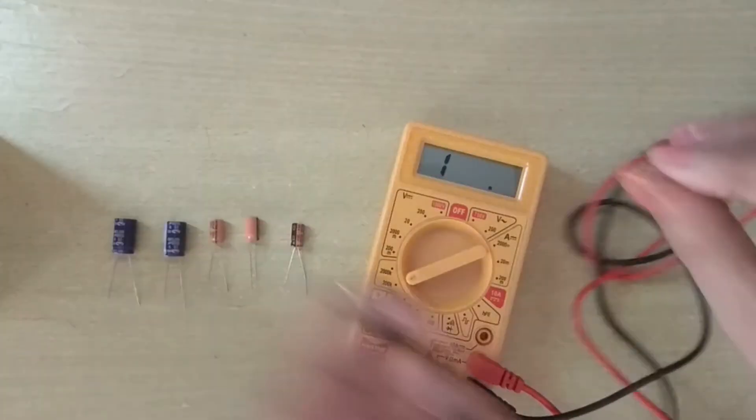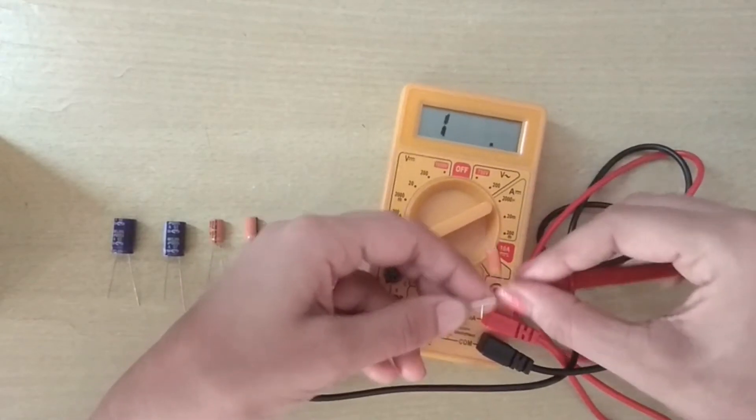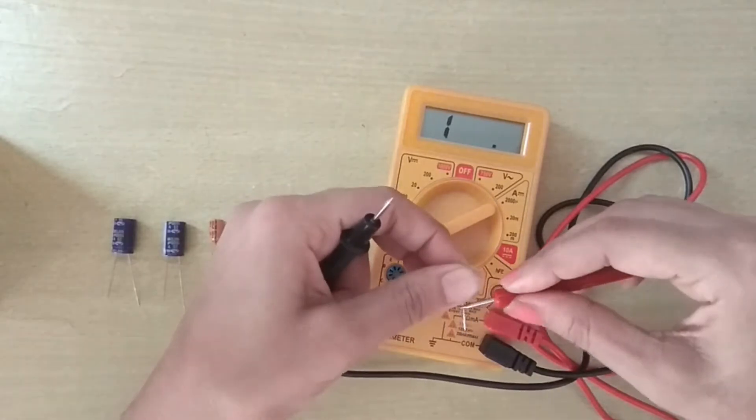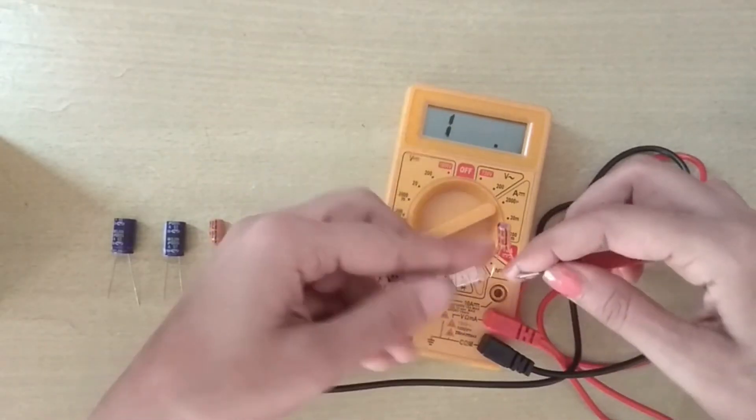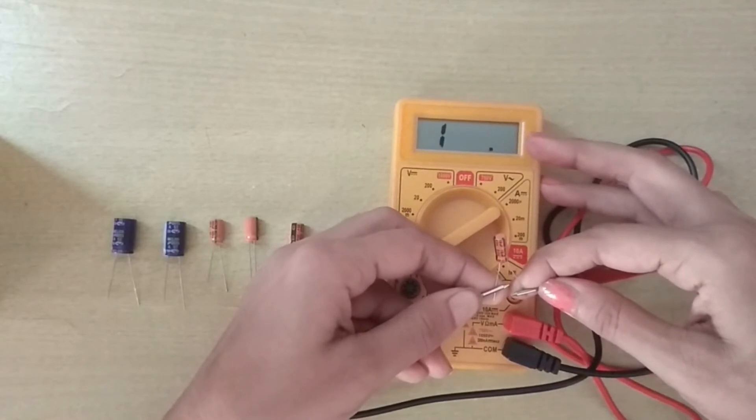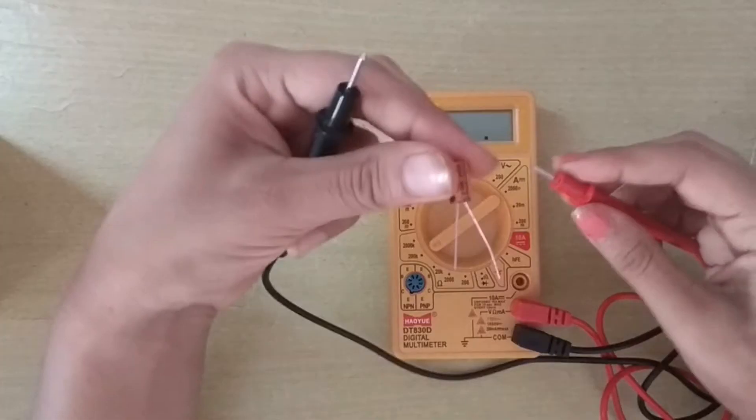Then I place the probe at either terminal. I should get a reading increasing from low to high. If I get a reading in this way, from low to high, that means the capacitor is OK. This is another 100 microfarad capacitor.